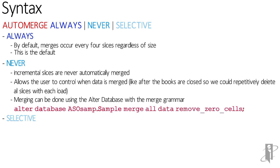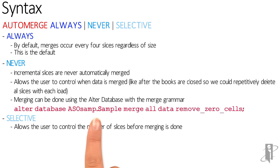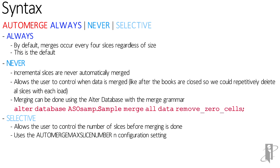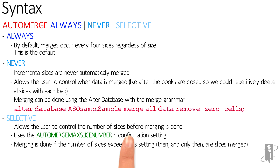Finally, selective allows the user to control the number of slices before the merging is done. To do this, we use the auto-merge max slice number in the configuration settings. The merging is done if the number of slices exceeds this setting, and then and only then are the slices merged.